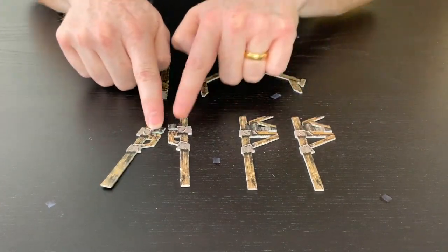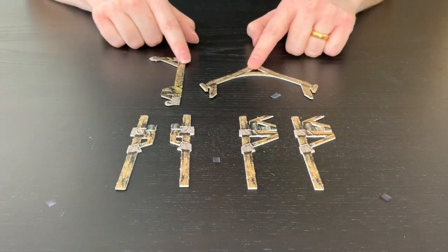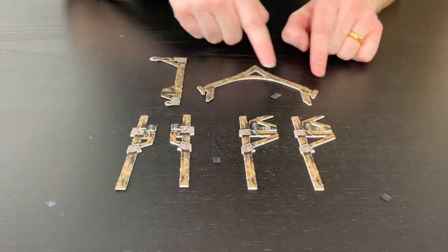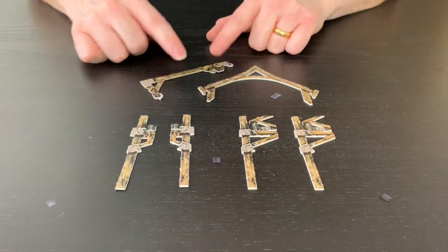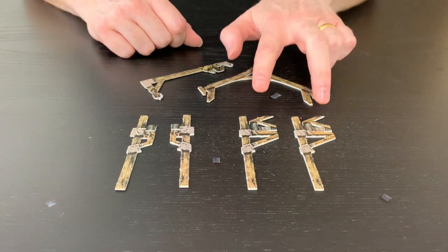Okay, so you've got your four beams, the kind of strut beams, and you've got this nice apex shape here and this is your little winch, as it were.